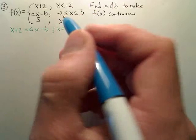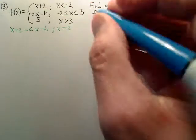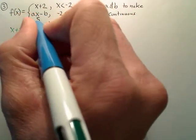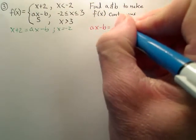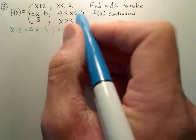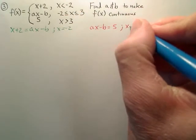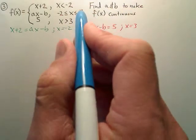I'm going to have to check for this. I will also have to check that the middle one equals the last one, because ax minus b has to equal 5 when x equals 3, because they meet at 3.